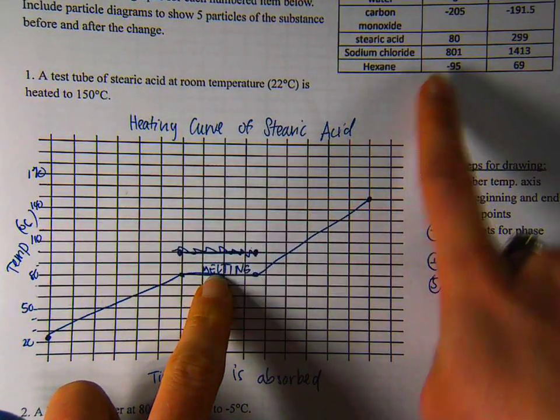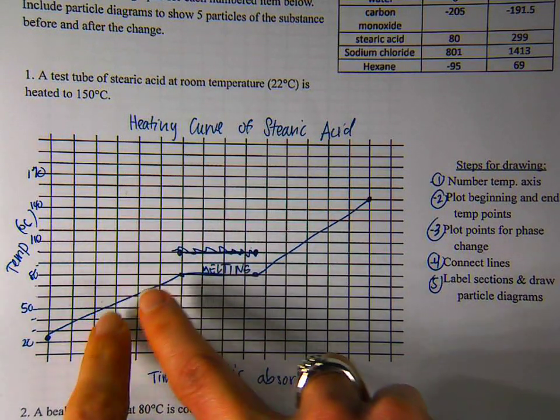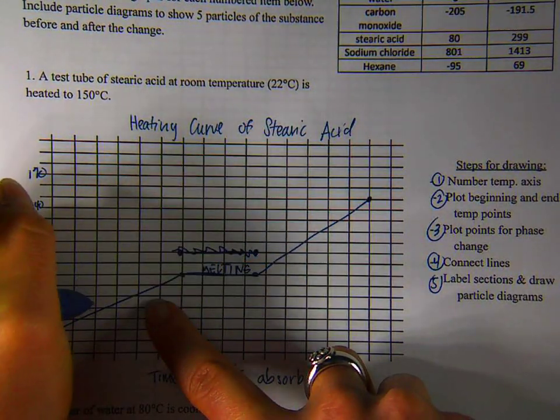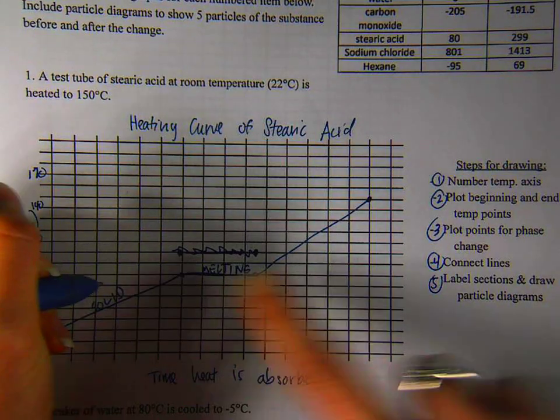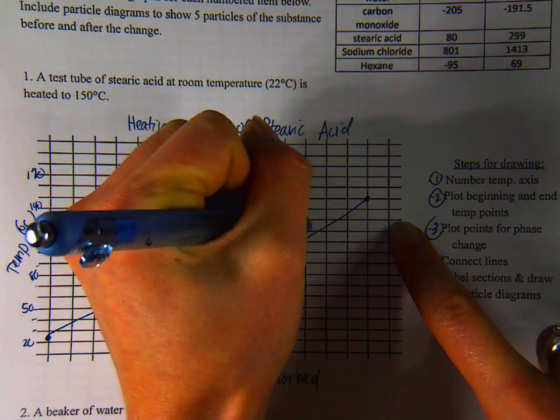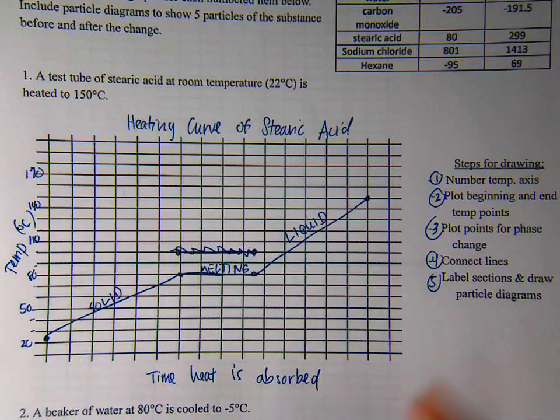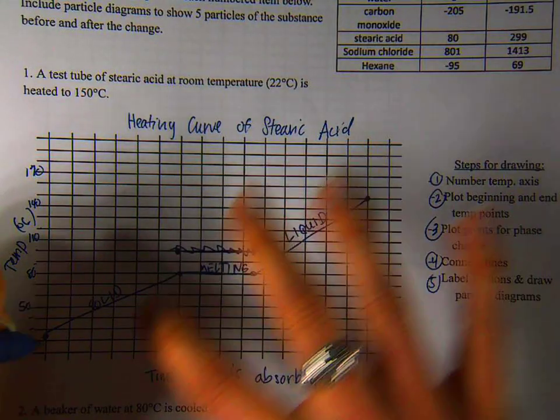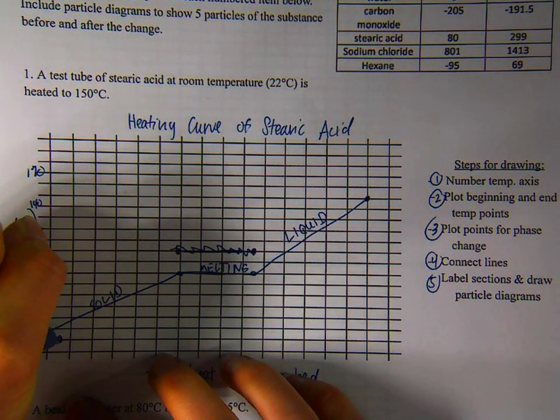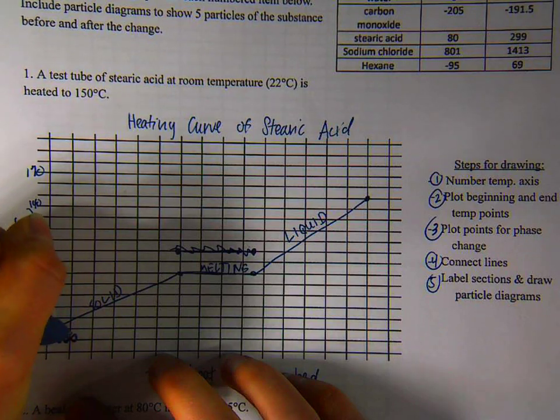The last step is to label the sections and draw particle diagrams. If the substance melts here according to my diagram, over on this side when it's cooler, it's going to be in the solid phase. And on this side it's going to be in the liquid phase. And the last thing that I'm going to do is draw the particle diagram. So five particles of the substance. I'm going to draw them as black circles.